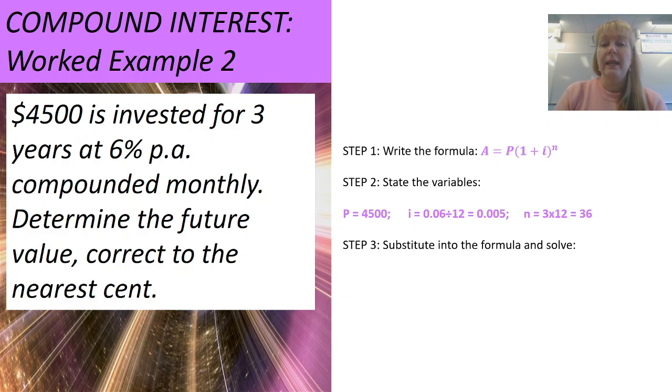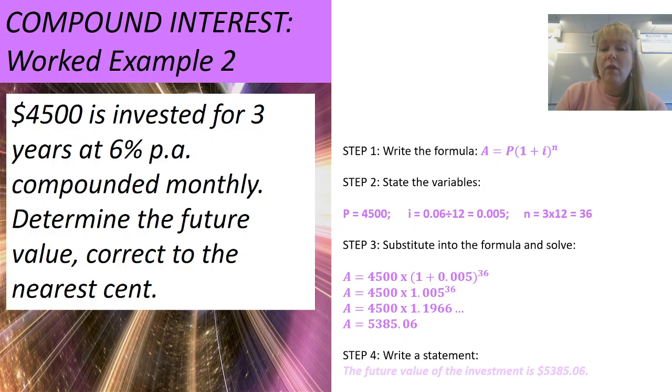Step 3, substitute into the formula and solve. Once I've written those variables down, this is the easy step now. I'm simply writing it in and using my calculator to solve it. I'm writing it down. I'm doing little steps at a time, not jumping straight to the end result because sometimes those intermediate steps are also awarded half marks. I'm not rounding in the middle of the question. I'm waiting to the very end to do my rounding, and then I write my statement. The future value of the investment is $5,385.06. I suggest if that went a little bit too fast for you, pause the video, see if you can work it on your calculator and come to the same answer.